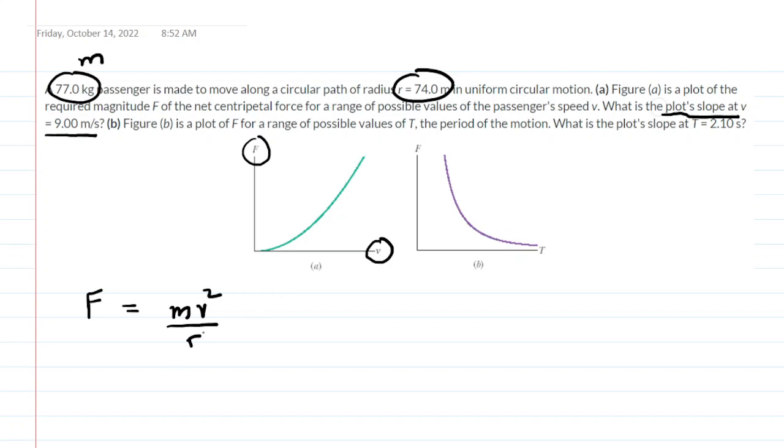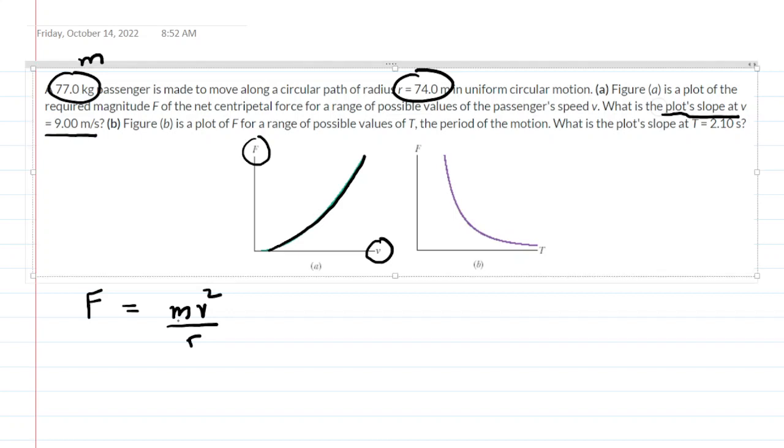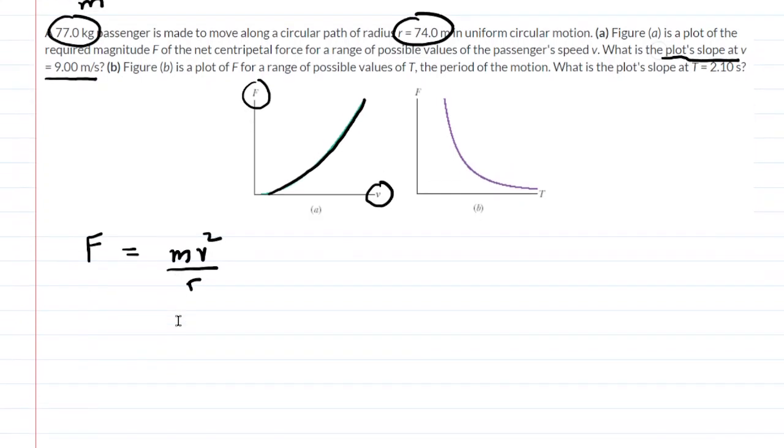The speed varies and we can see that in the graph as this curve moves upward, the speed is increasing along with the centripetal force. So the speed is our variable, but the mass and the radius are constant values. Those are not changing.